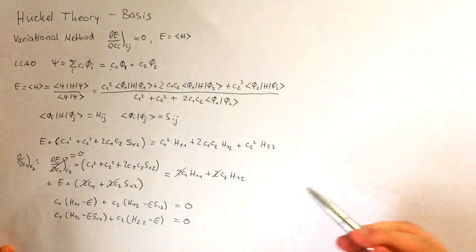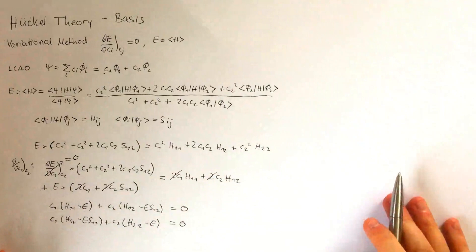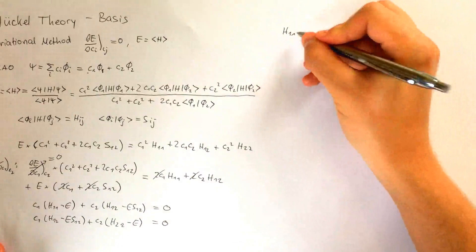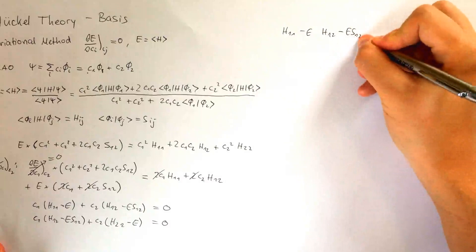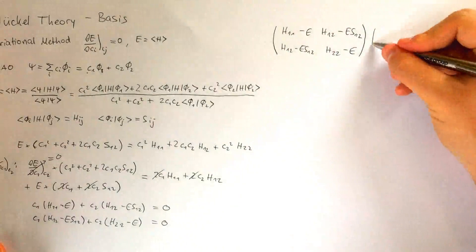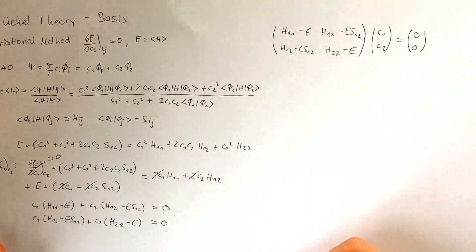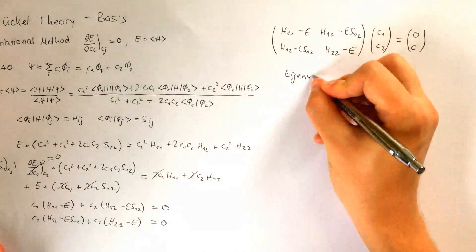Now if you look at this equation, you might realize that it's a matrix equation, where these are the entries of the matrix, and this is the vector we're multiplying by. So let me rewrite this as H11 minus E, H12 minus E S12, H12 minus E S12, and H22 minus E as our matrix. And then we times it by a vector of coefficients C1, C2. And all of this is equal to the zero vector, which we could realize is an eigenvalue problem.